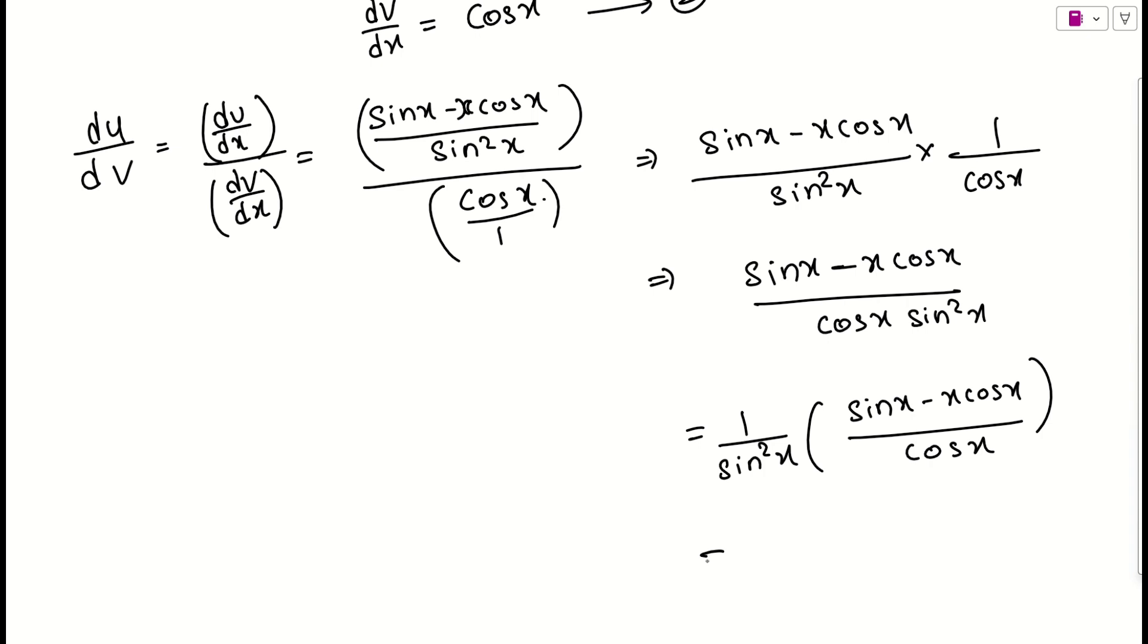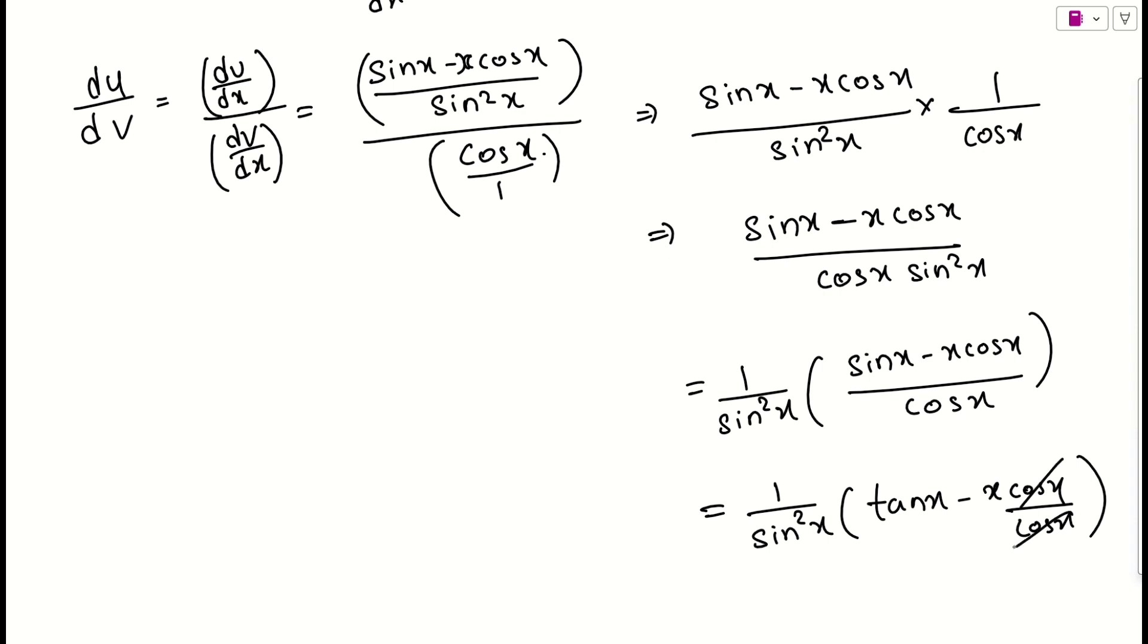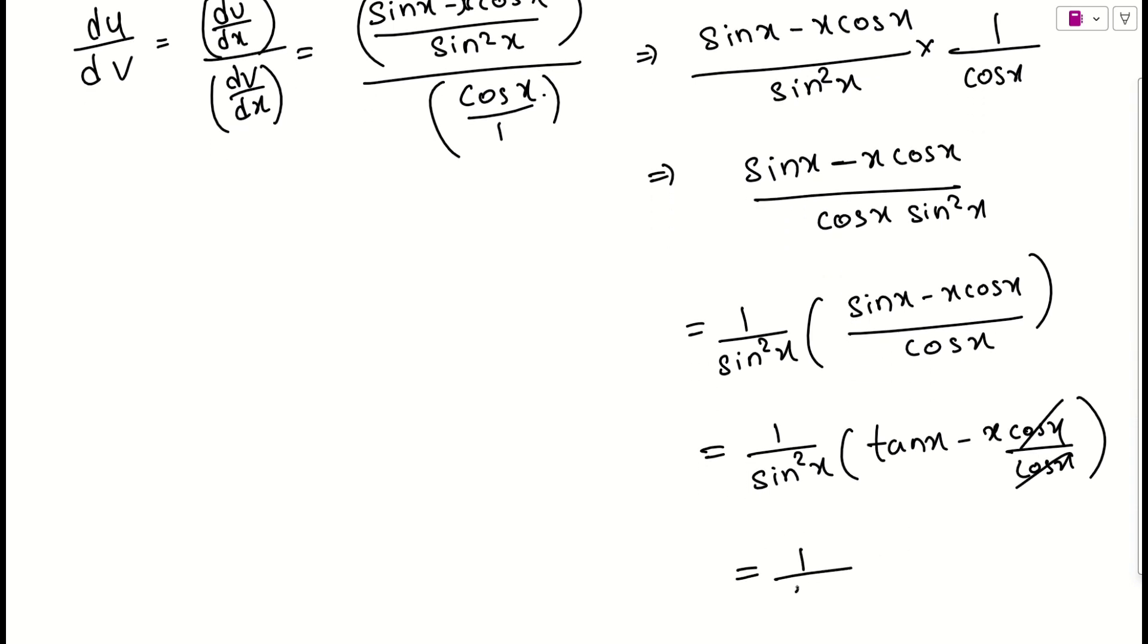What I will suggest is try to split it out. What I will be getting here, if I take sin square of x, sin by cos will be tan x minus this is x cos x by cos x. So we know that cos cos will be cancelled. So this is x alone. Finally what I will be getting? 1 by sin square of x times tan x minus x.